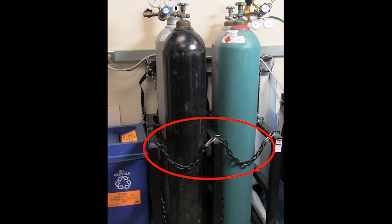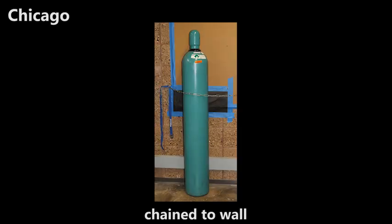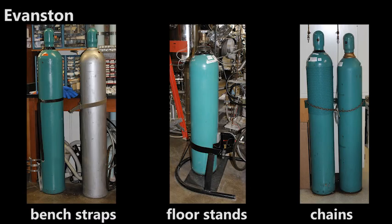Ensure that the cylinder is properly secured. In Chicago, cylinders must be chained to the wall. In Evanston, cylinders may be secured by bench straps, floor stands, or chains.